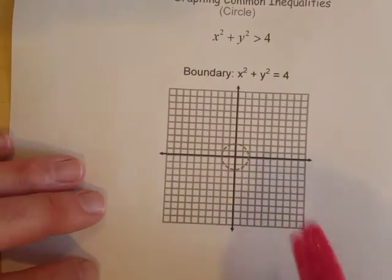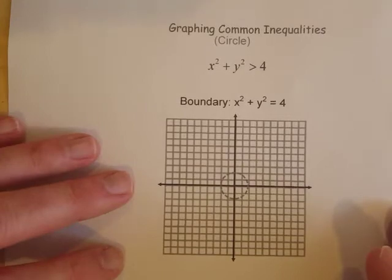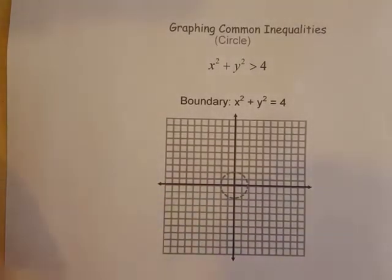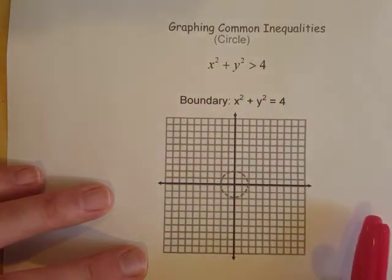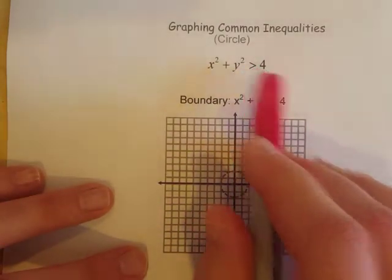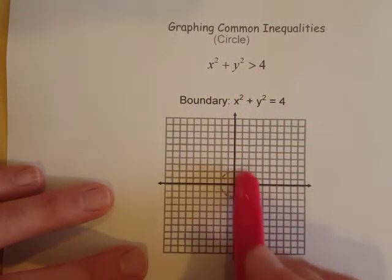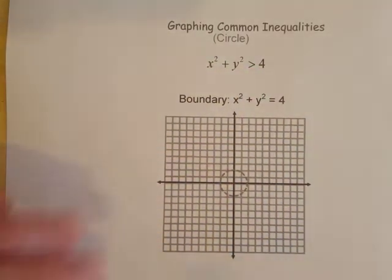For inequalities involving circles like this one, what I would do is first of all think about the boundary line, think about the solid or dotted nature of this line. Looks like this one's going to be a dotted line because it doesn't have an equal to bar.